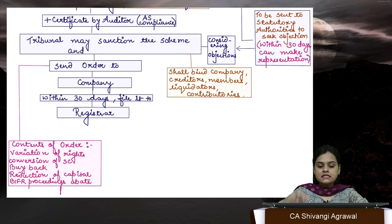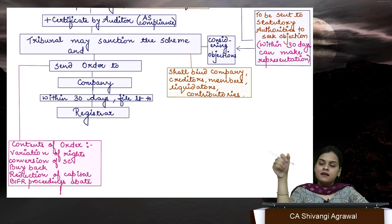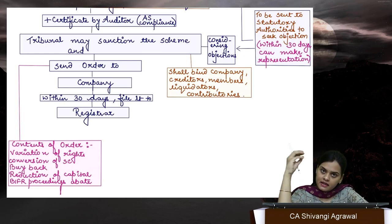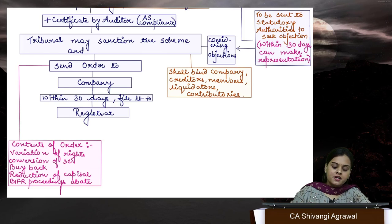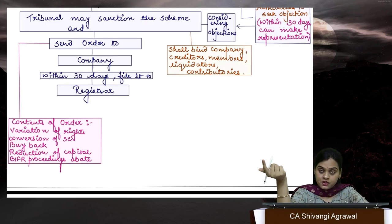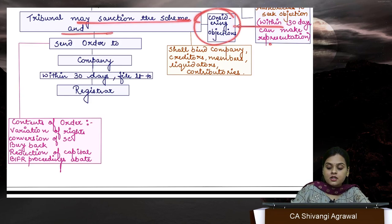After this approval is taken, NCLT also needs an auditor's certificate confirming that whatever accounting treatment is going to take place in the books will be in accordance with the accounting standards applicable. After approval and CA certificate have been received, the tribunal sanctions the scheme — of course, after considering objections of statutory authorities. Whatever order is passed shall bind everyone.